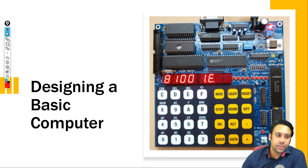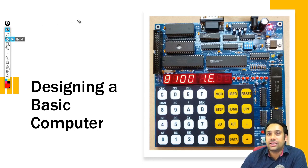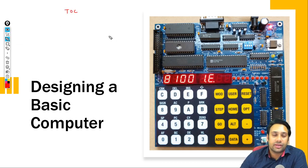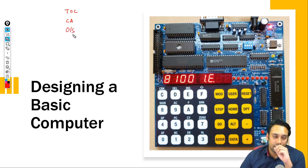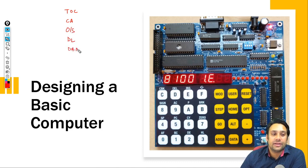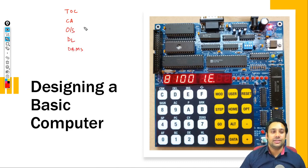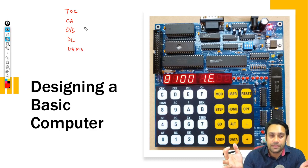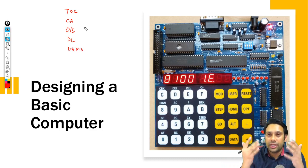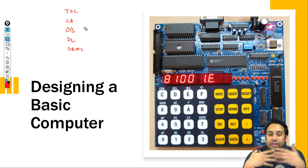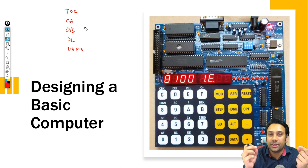When you study a subject — jaise agar hum log kuch subjects padh rahe hain, like theory of computation, computer architecture, operating system, digital logic, DBMS — these are all individual topics, individual units. But ye jo sabhi subjects hain, ek dusre ke saath kaisa interlinked hain, aur ye ek dusre ke saath kaisa communicate karte hain, cross-disciplinary kaisa use karte hain — woh humein pata hona chahiye.